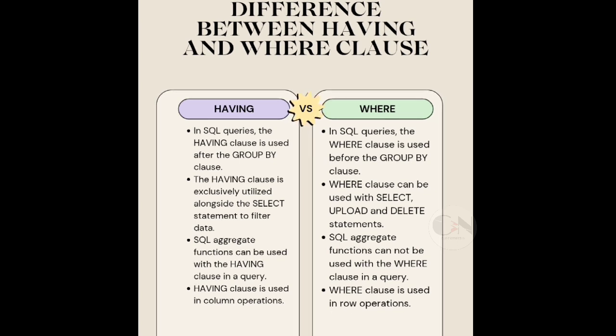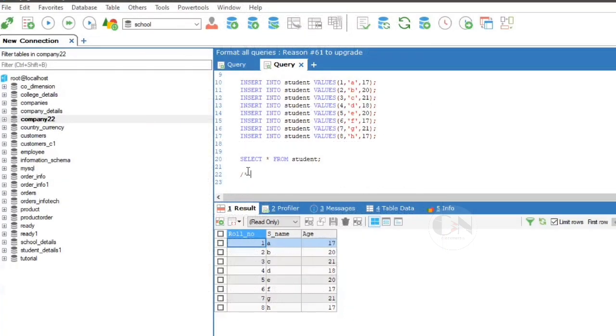Number seven: having clause is used in column operations, whereas where clause is used in row operations. Let's apply this with some examples. Today I'm going to use student table under school database.